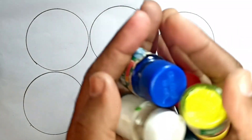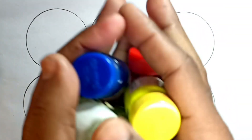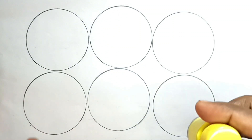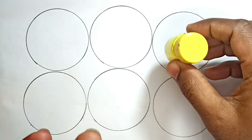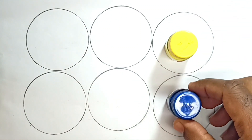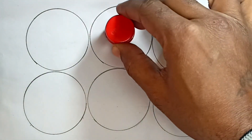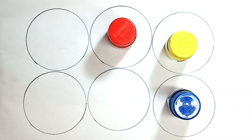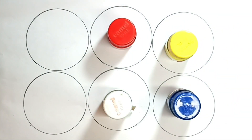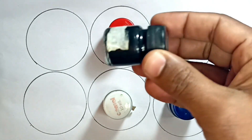Color Name. Yellow Color. Blue Color. Red Color. White Color. Black Color.